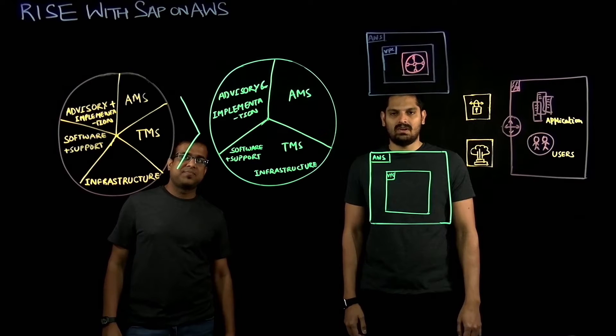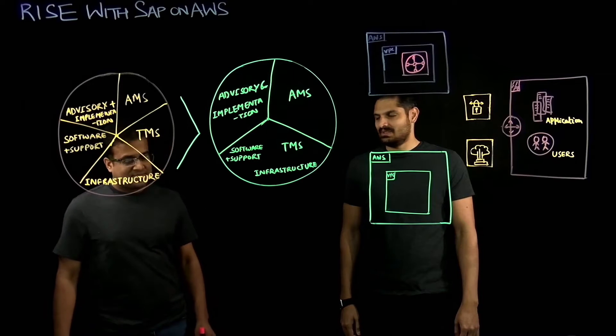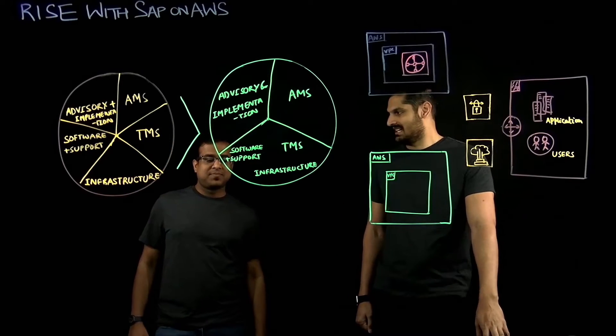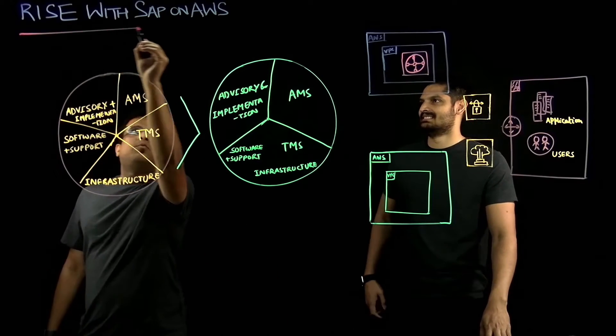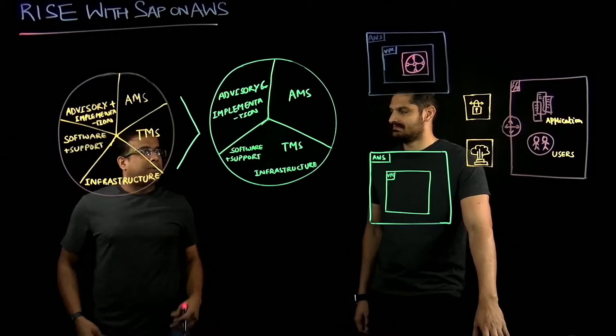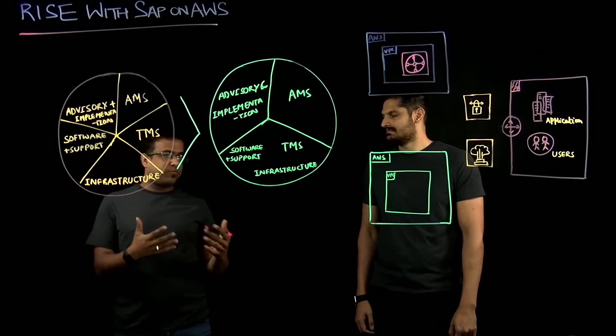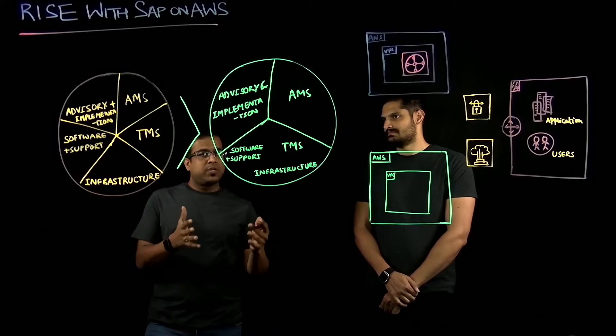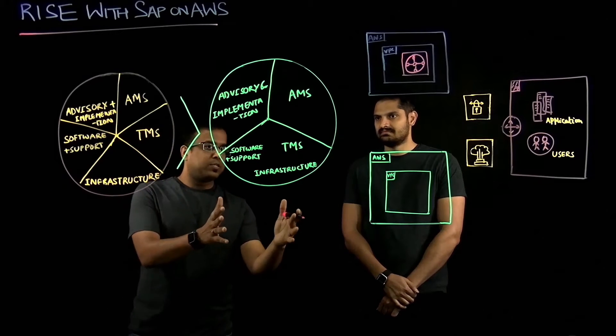So today we're going to talk about Rise with SAP on AWS. So Sunny, what is Rise with SAP on AWS? Can you dive deep on that? Sure. Rise with SAP on AWS is a new construct by SAP to combine software licensing, technical managed services and infrastructure together in one bundle. So let me take a step back and explain what was traditionally done and what is done as part of Rise with SAP.